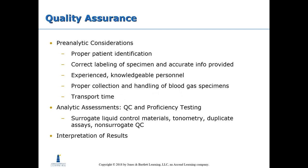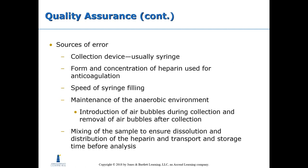Quality assurance considerations include pre-analytical and analytical factors: proper patient identification, correct specimen labeling, accurate information, experienced personnel, proper collection and handling of blood gas specimens, and transport time. Sources of error include the collection device (usually a syringe), the form and concentration of heparin used for anticoagulation, the speed of syringe filling, maintenance of the anaerobic environment, introduction of air bubbles during collection and their removal after collection, mixing of the sample to ensure dissolution and distribution of heparin, and transport and storage time before analysis.